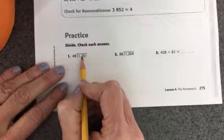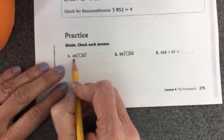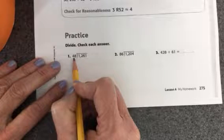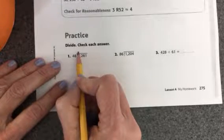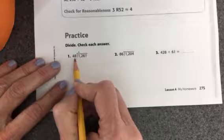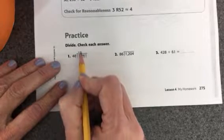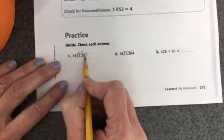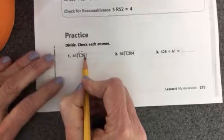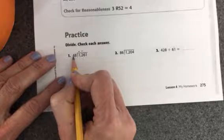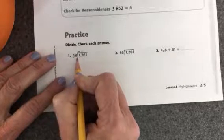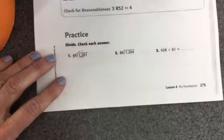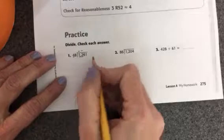We're going to take 1,246 and divide by 48. So I need to ask myself, how many times will 48 go into 1? Well, it won't go into 1 at all. How many times will 48 go into 12? It won't go into 12 also. So I'm going to take 48 into 124. Now I want to use compatible numbers, so what I'm going to do is ask myself how many times will 4 go into 12.